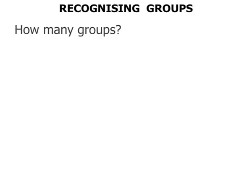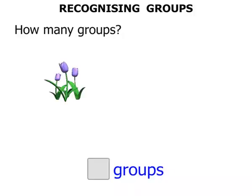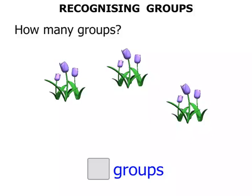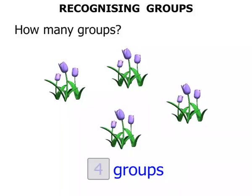Recognising groups. How many groups? We'll write our answer down here. One group of flowers. Two groups of flowers. Three groups of flowers. Four groups of flowers. We've got four groups.